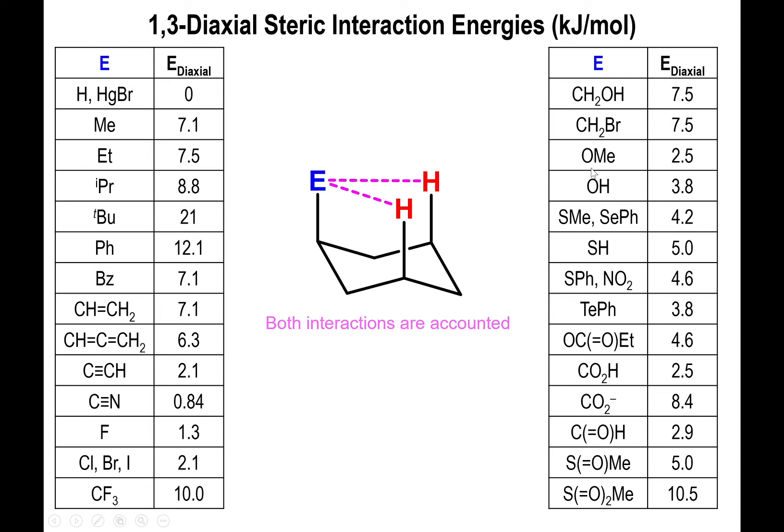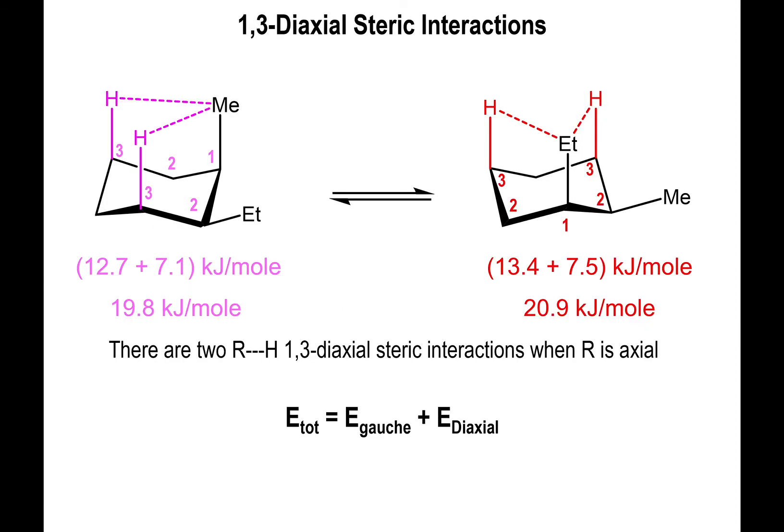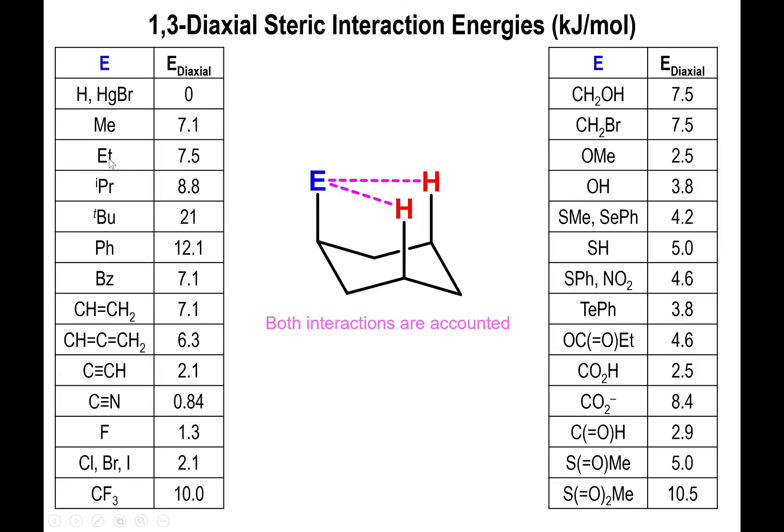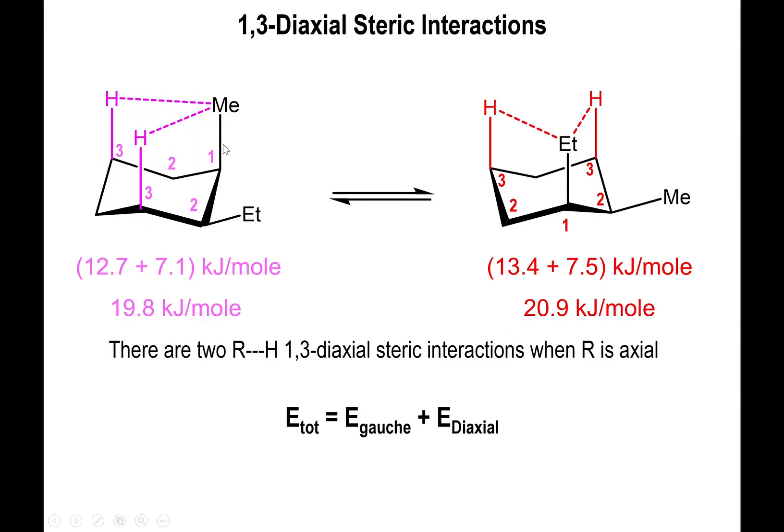So this is kind of a comprehensive list of all the different groups that you might encounter. You have your simple alkyl groups, but you have a few other ones. You have a vinyl group, your alkyne group, your nitrile group, you have carboxylic acids, carboxylates, esters, etc. So what we're going to do is we're going to add those groups. The diaxial, the 1,3-diaxial interaction is 7.5. The methyl 1,3-diaxial interaction is 7.1. So we add those two values correspondingly to the conformers, and this gives us the final value, 19.8 kJ per mole for the conformer on the left side, and 20.9 kJ per mole for the conformer on the right side.